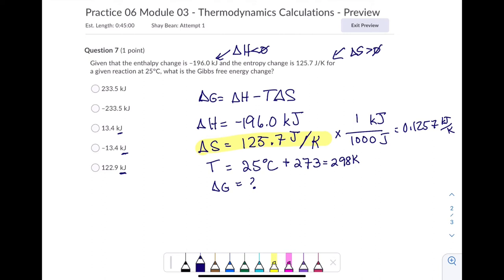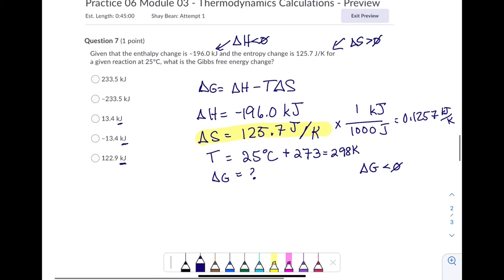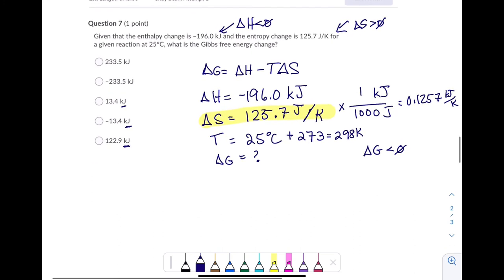Since we have both driving forces for a spontaneous reaction, I do expect this reaction to be spontaneous, which means I do expect the delta G to be negative. Now, if I have one driving force and not the other, I cannot necessarily predict at this temperature whether or not it's going to be spontaneous. But since I do have both driving forces, I can predict that it will be spontaneous.